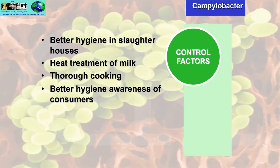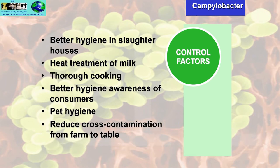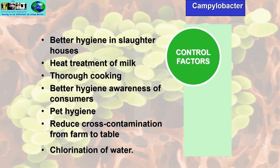If you ask any person on the street if they know what Campylobacter is, they'd probably look at you with a blank stare — they've never heard of it. It has been in the news quite recently, but people are just not aware of it. Other control factors include good pet hygiene, reduced cross-contamination from farm to table, and chlorination of water.